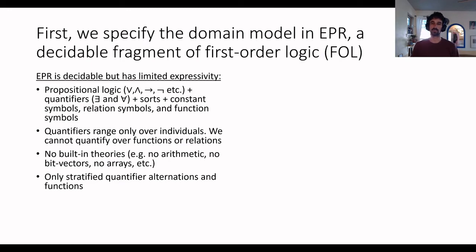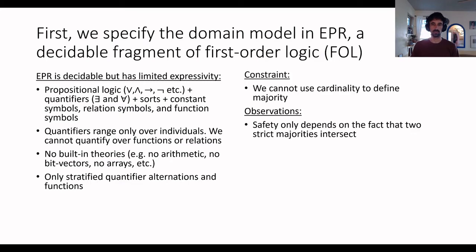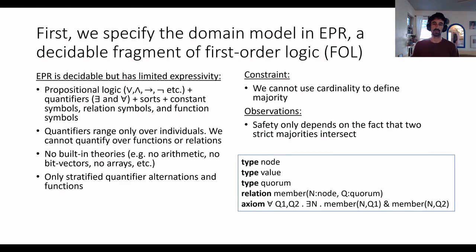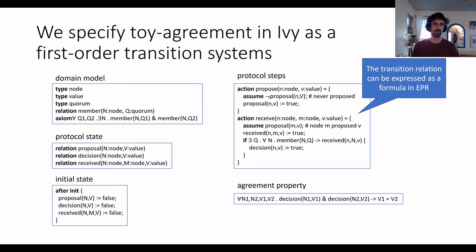How do we model the protocol in EPR? We cannot use cardinality to define majorities, but we can observe that the protocol doesn't really depend on cardinality — it only depends on the fact that two strict majorities intersect. So we abstract over cardinalities by defining three types: node, value, and quorum. Elements of type quorum represent majority sets. We declare a relation 'member' to denote set membership, and crucially give the axiom that for any two quorums, there is a node they have in common.